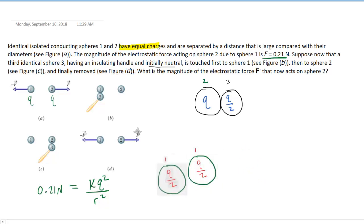So we're going to touch those together. Why don't we move sphere one out of here? And we want to figure out the total amount of charge, just like we did previously. And to do that, we're going to add these charges together. So we're going to take Q and add that to Q over 2.